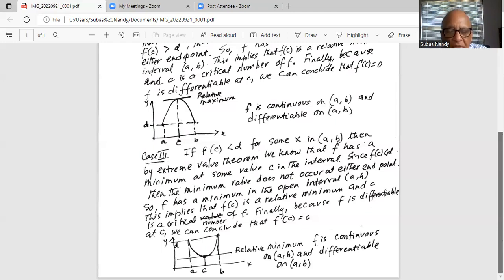So this is the picture: relative minimum of f occurs at when x equals c, and f is continuous on the interval [a, b] and differentiable on (a, b). Because f is differentiable, we can conclude that f prime of c is equal to 0.